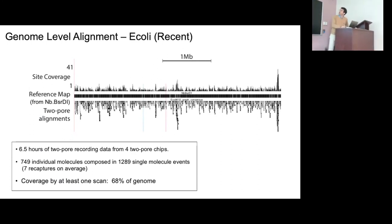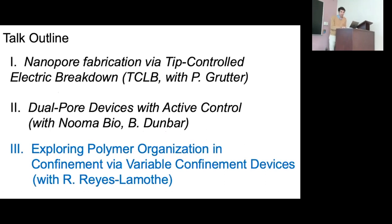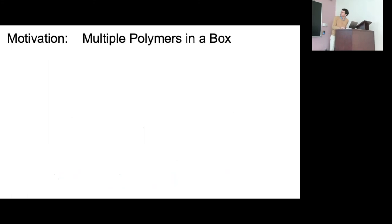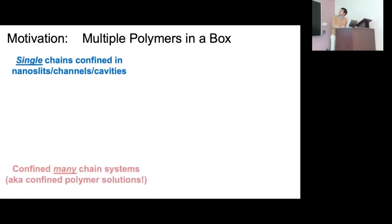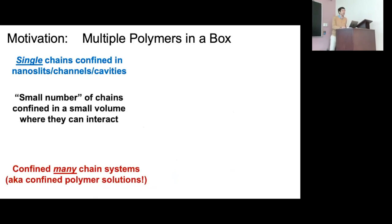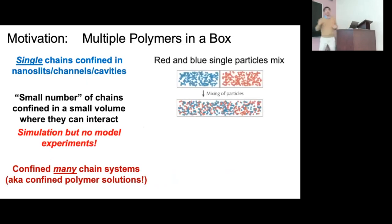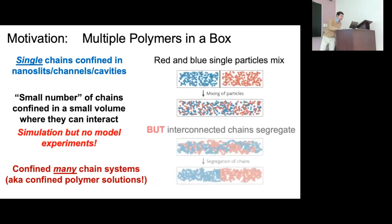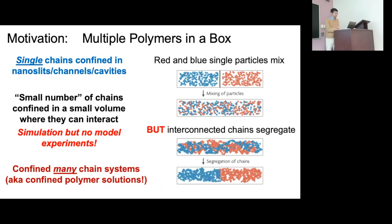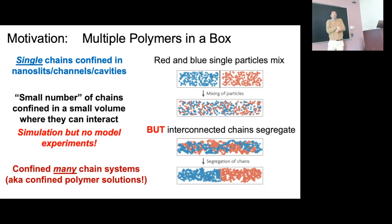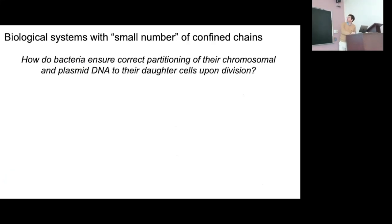The last topic is multiple chains in confined boxes. I now have not one chain but many — two, three, four — in a box, and I want to see how they interact. There's lots of simulation of this problem but no model experiments. Small disconnected particles mix because entropy favors that. But if you have connected chains that intermingle, they actually segregate — not obvious, but entropy actually favors the separation of large polymer chains. This leads to a kind of phase physics distinct from liquid-liquid droplets, with implications for biology.